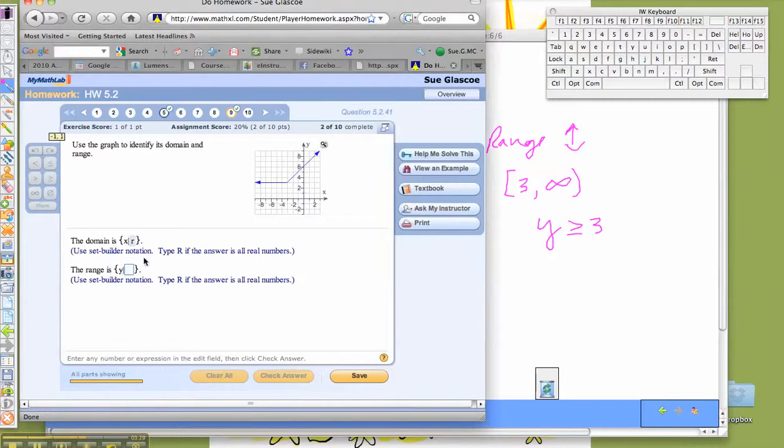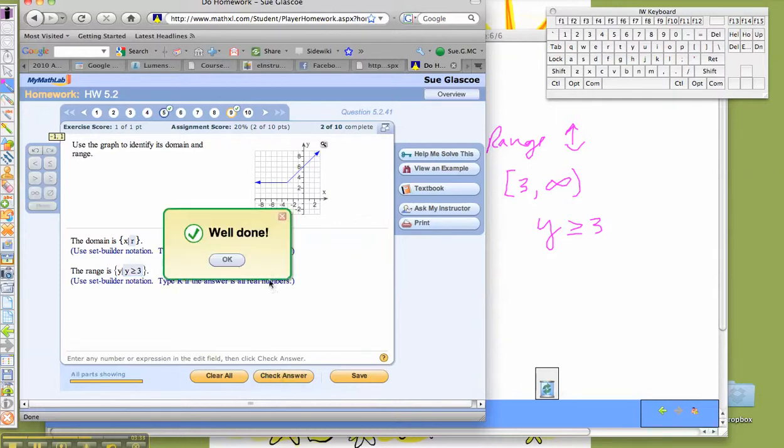So I've got to put that back in over here. Click in here and I'm going to use my keyboard here. So Y is, and then to get my symbols I have my little symbols here. It's bigger than or equal to 3. Check my answer and we're good.